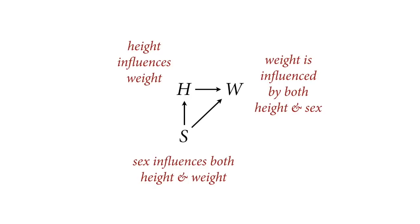Let's put all these pieces together in a DAG — a heuristic causal model that includes all three variables. You can read the nodes as statements about what is influencing each variable: height influences weight, sex influences both height and weight, and weight is influenced by both height and sex. Those are the relationships indicated by the arrows. To do more work we have to specify exactly how those influences work — the shape of the functions. But you can do a lot with this heuristic representation.